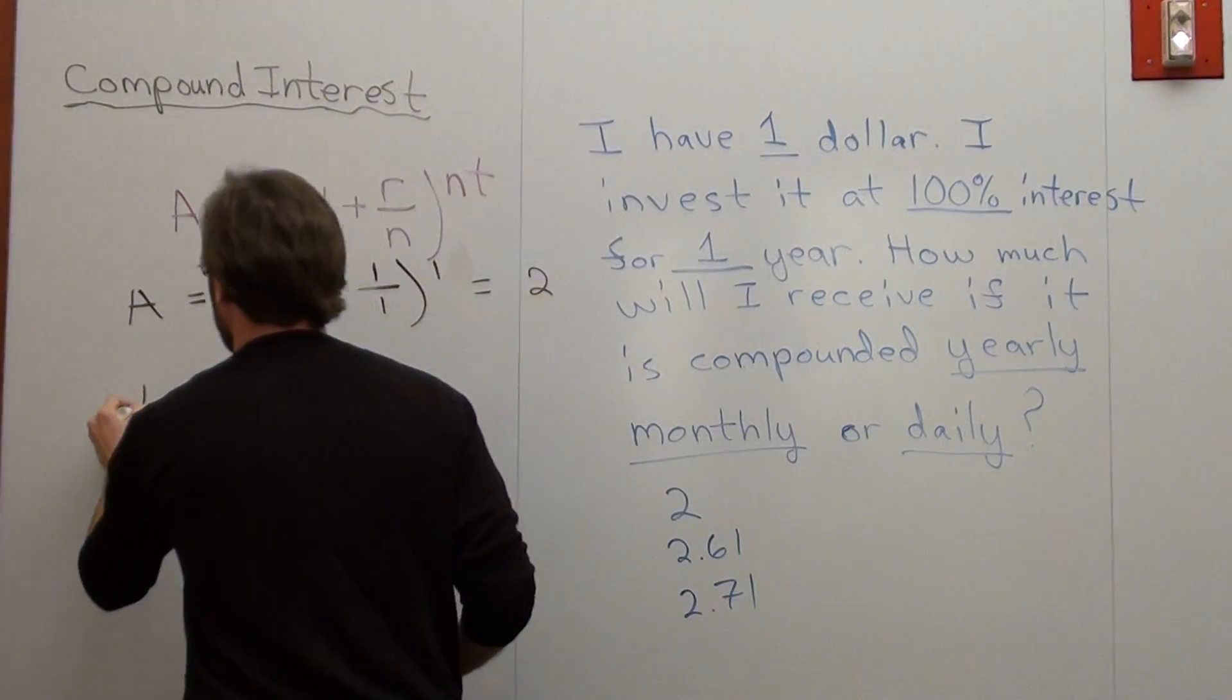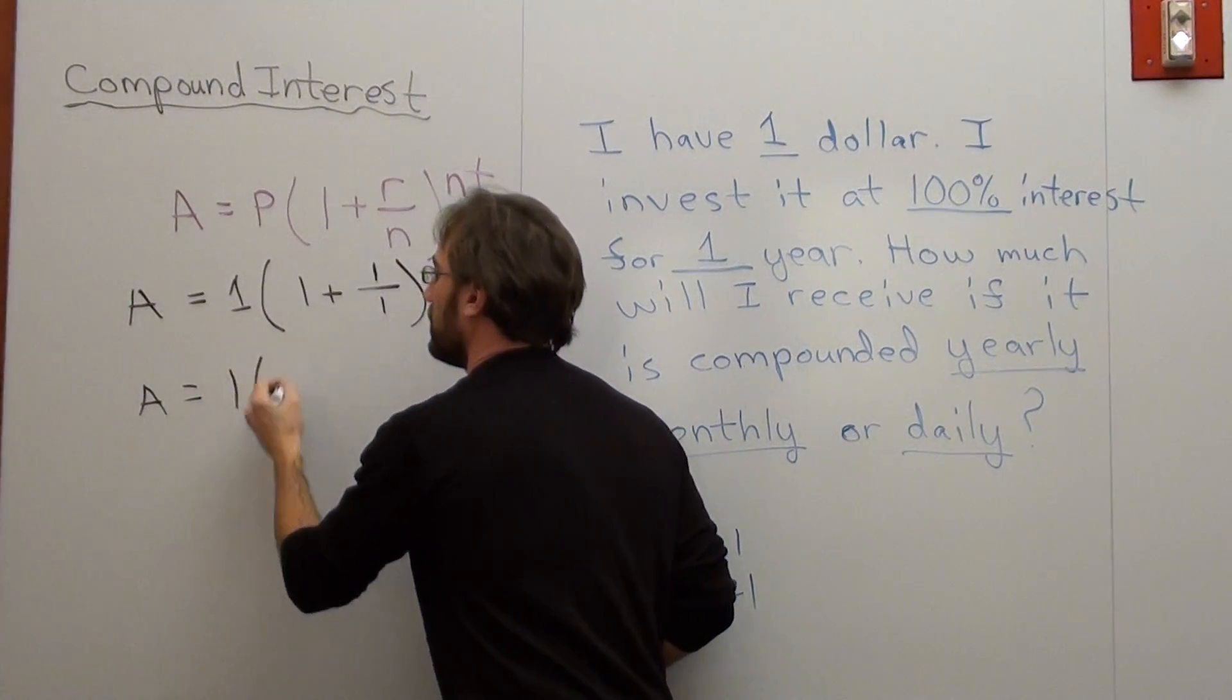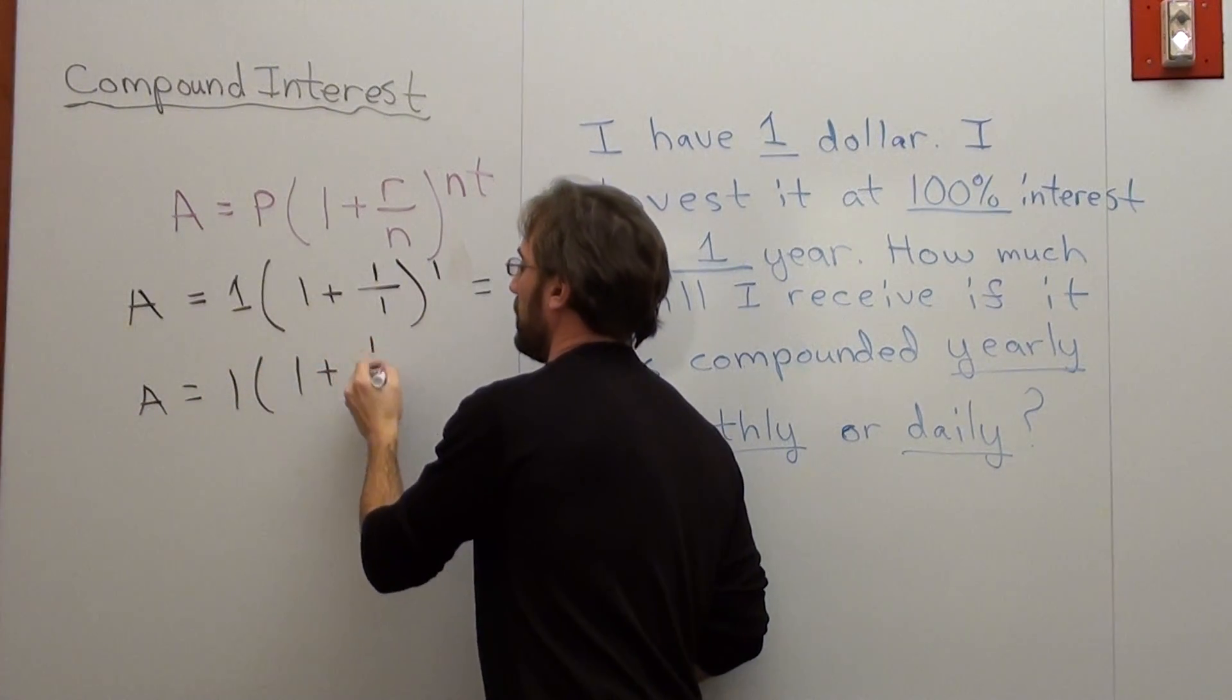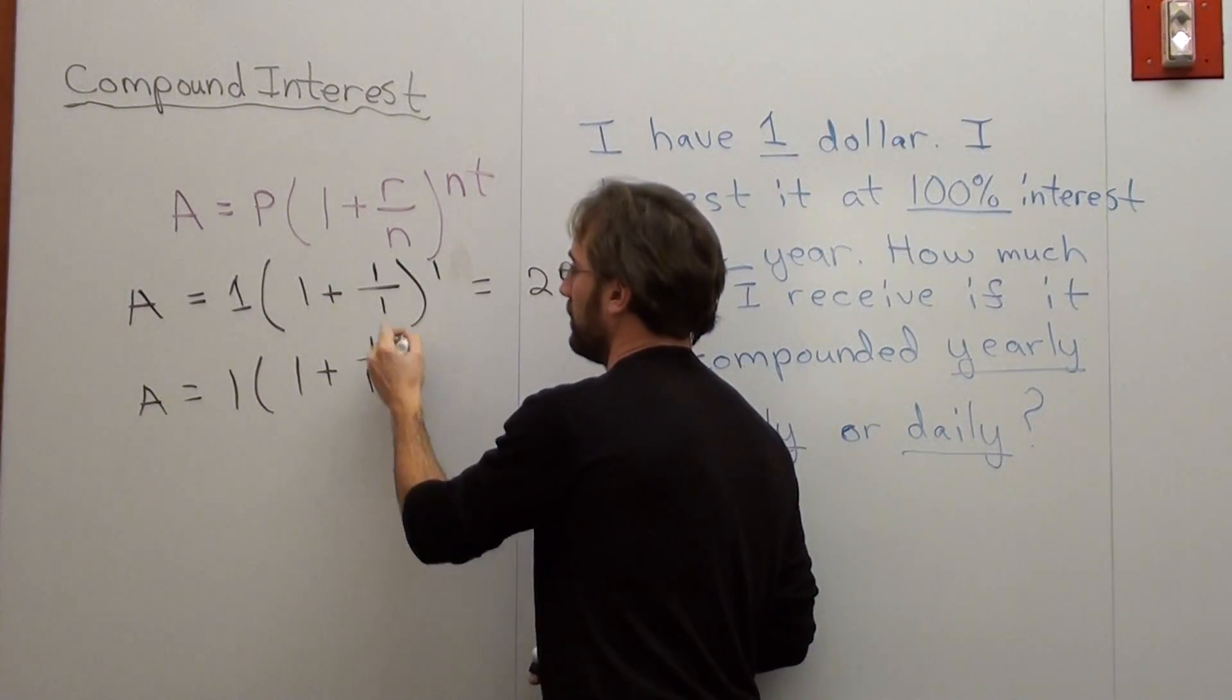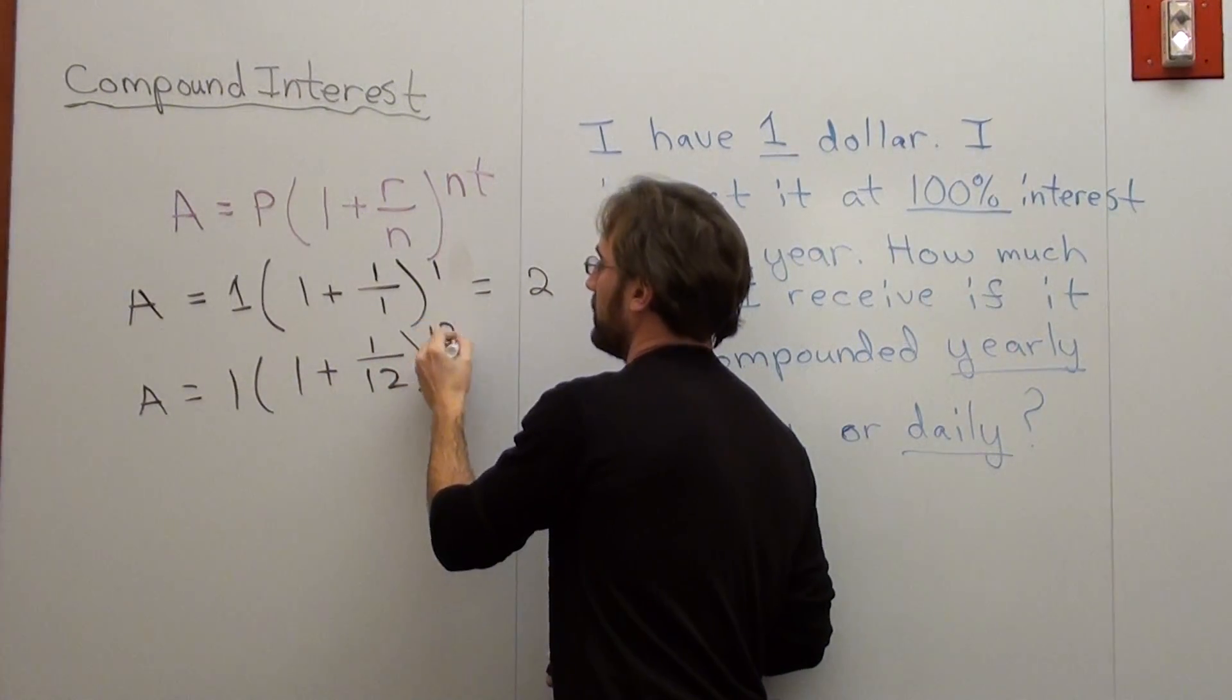Now, if I switch it up, 1, 1 plus 1 over. If I compound it monthly, well, how many months happen in a year? It's 12. And my n is 12 times 1.